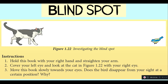Then, move your book slowly towards your eyes. At some point, you will notice that the bird is disappearing. This is because the image of the bird actually falls on the blind spot of your eye. Hence, you cannot see the bird.